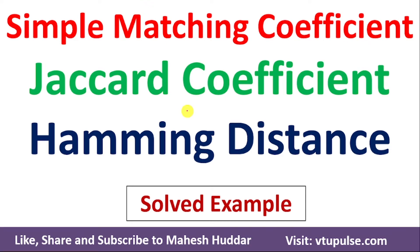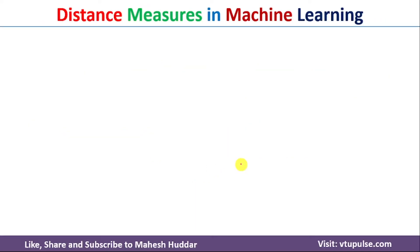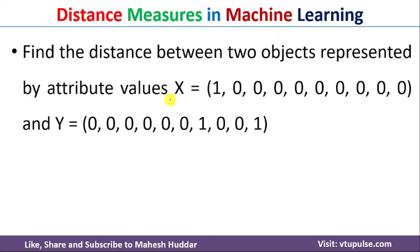Welcome back. In this video I will discuss how to find the values of different distance measures like Simple Matching Coefficient, Jaccard coefficient, and Hamming distance with the help of a simple solved example. These are the two objects given to us. The first object is X and the second object is Y, and each of these objects contains 10 elements. Given these particular objects, we need to find the values for those distance measures.